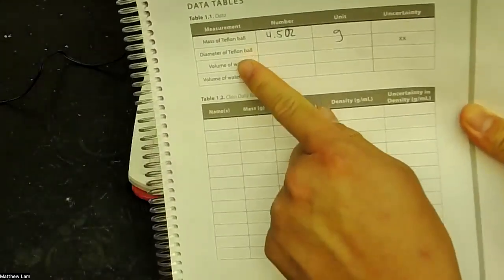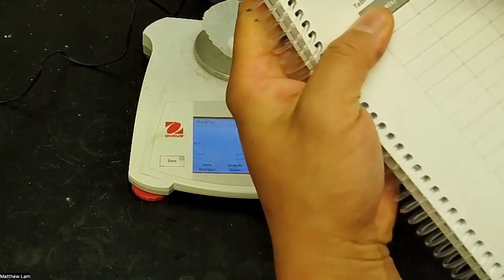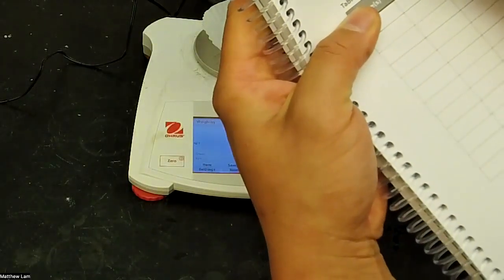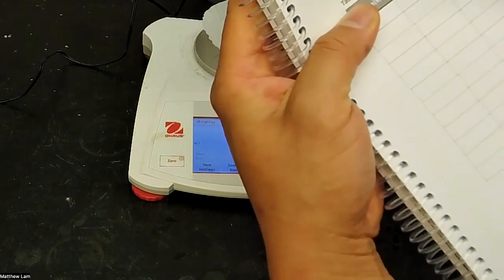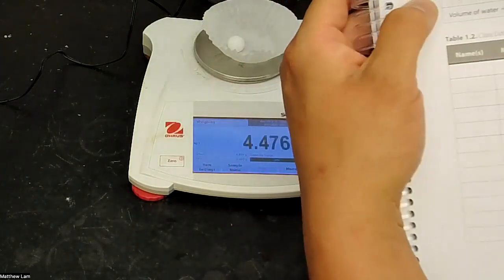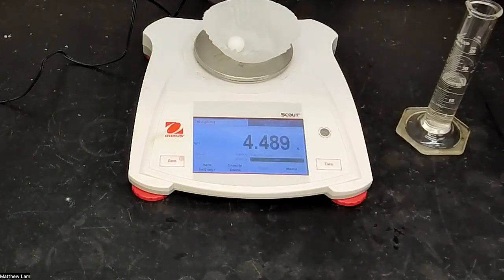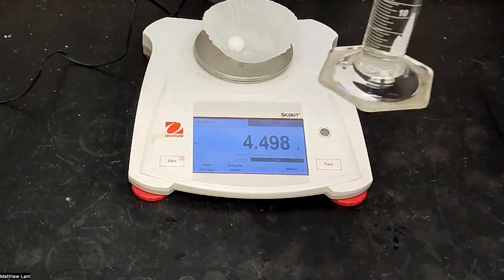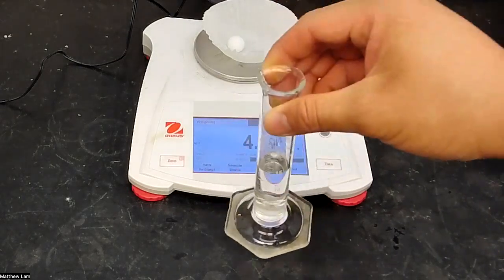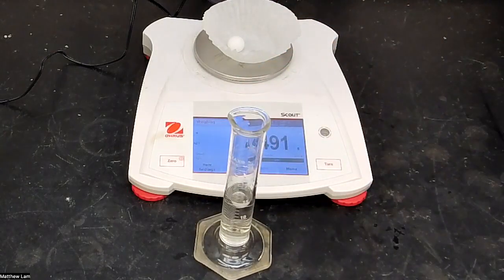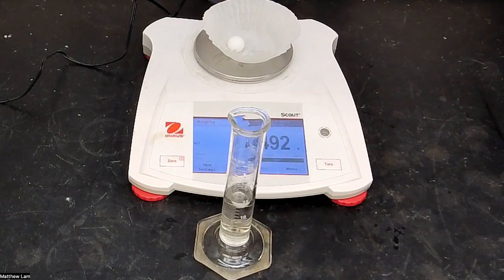The diameter of the Teflon ball was already given. It's five-eighths of an inch. And then the volume of water before we put in the ball—so we want to determine the volume of water in this before we put in the ball. So I'm going to adjust the camera really quick so it's level with the graduated cylinder.